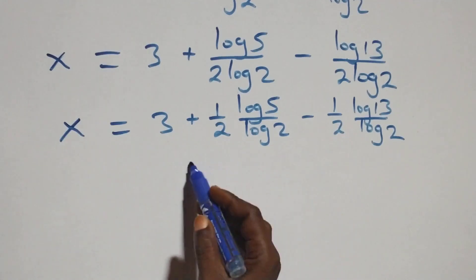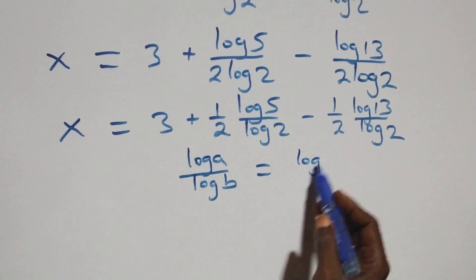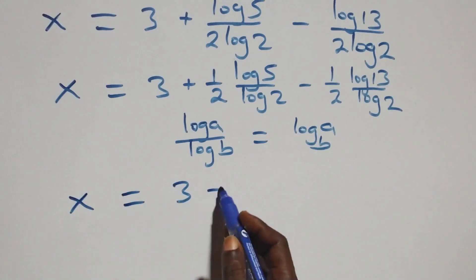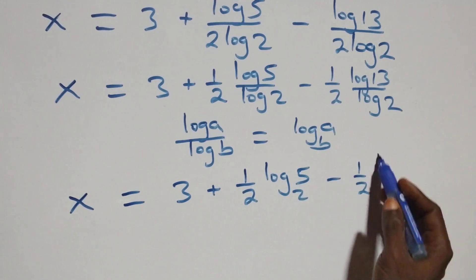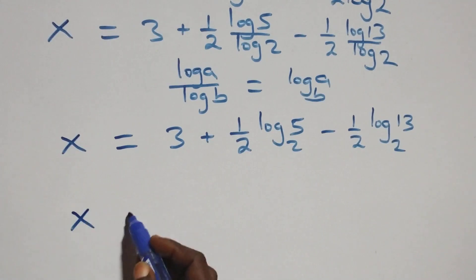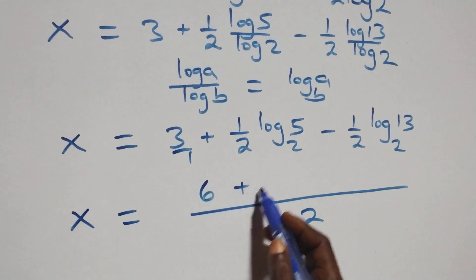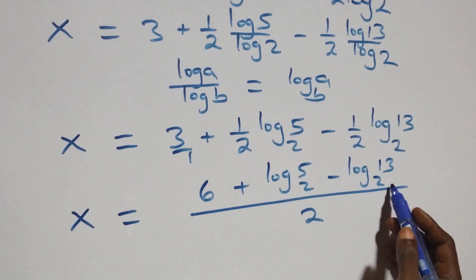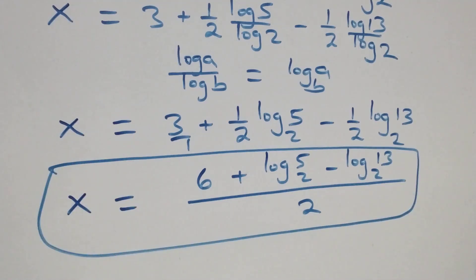Then we can write this as x equals to 3 plus 1 over 2 multiplied by log 5 over log 2, minus 1 over 2 multiplied by log 13 over log 2. Then we apply the change of base rule: when we have log A over log B, this is the same thing as log A to base B. So what we have becomes x equals to 3 plus one half log 5 base 2 minus one half log 13 base 2. Bringing this together as one fraction over 2: x equals to 6 plus log 5 base 2 minus log 13 base 2, all over 2.